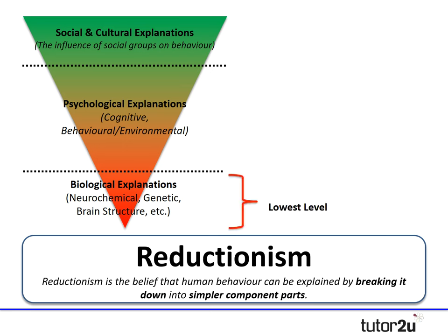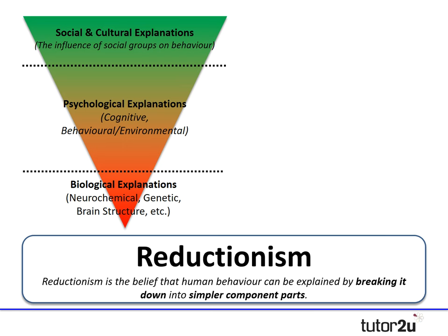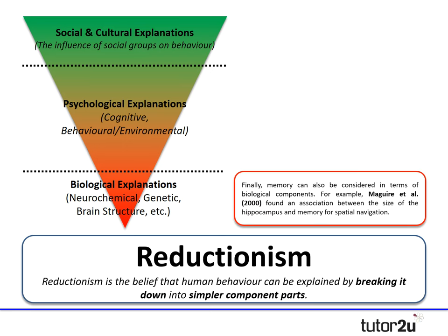These levels have names — lowest, middle, and highest — but it's best to illustrate them with an example. Starting at the bottom: taking memory as an example, memory can be considered in terms of biological components. For example, you may have come across a study by Maguire who found an association between the size of the hippocampus and memory for spatial navigation in taxi drivers. Maguire has biologically reduced the explanation of memory to just one biological factor — the size of the hippocampus.